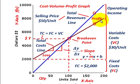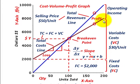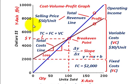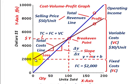Looking at variable cost on the graph: that's everything above the fixed cost line up to the total cost line. For 200 units, variable cost is from the $2,000 fixed cost up to wherever the total cost line sits. Fixed cost remains constant regardless of how many units are sold — it's a steady, unchanging amount.